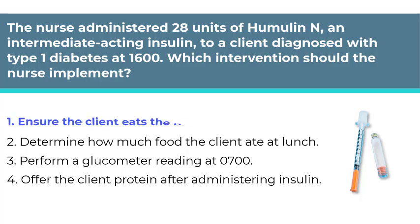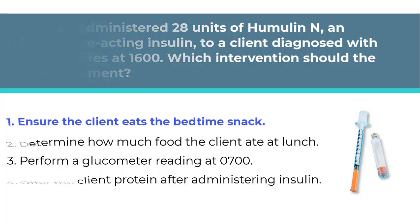The correct answer is number 1. Humulin N peaks at 6 to 8 hours, making the client at risk for hypoglycemia around midnight. Having a bedtime snack will prevent nighttime hypoglycemia. Numbers 2, 3, and 4 are incorrect because food intake at lunch will not affect the client's blood glucose level at midnight. The glucometer reading should be done around 2100 to assess effectiveness of the insulin given at 1600. The onset of Humulin N is 2 to 4 hours, but it does not peak until 6 to 8 hours, which is when the patient is at risk for hypoglycemia.